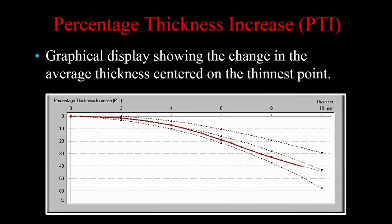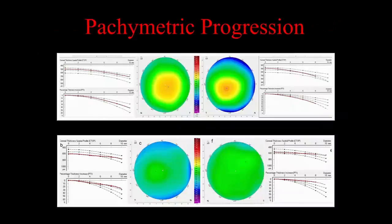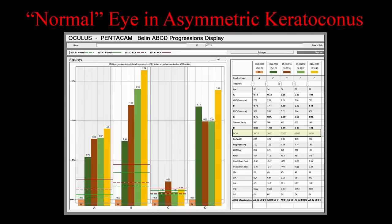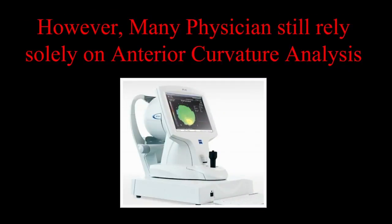Additionally, if you can measure the anterior and posterior surfaces of the cornea, you can develop a full corneal thickness map. This is some of Renato's work, showing a graphic representation of the pachymetry progression — the speed at which the cornea changes thickness going from the thinnest point to the limbus. Here are two corneas with identical apical readings — the same ultrasonic pachymetry. The one on the upper left is a normal but thin cornea. The one on the right has the same ultrasound reading but a highly abnormal pachymetric tracing. The optimal postoperative result requires full anterior segment analysis, meaning being able to look at the posterior surface. In light of all this, however, I realize many physicians still rely solely on anterior curvature analysis — and could that many physicians be wrong?